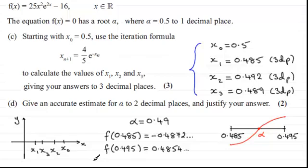but I'm just going to finish that off by saying that since there's a sign change, since there's a sign change, then α must equal 0.49 to two decimal places, 2dp for short. All right?